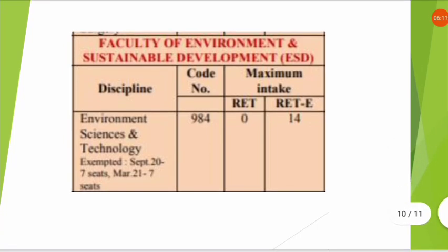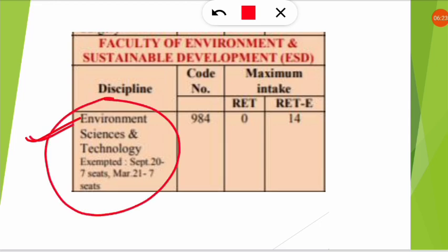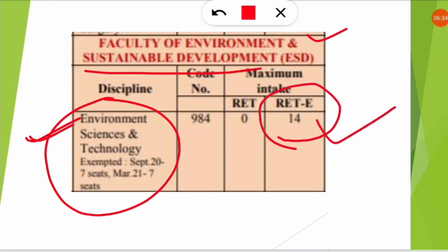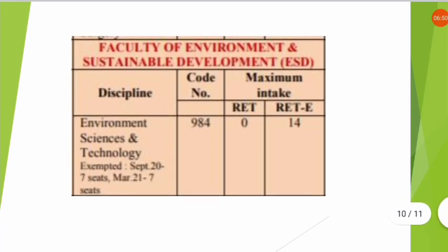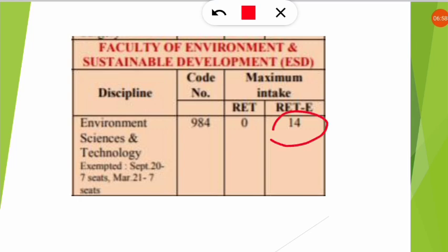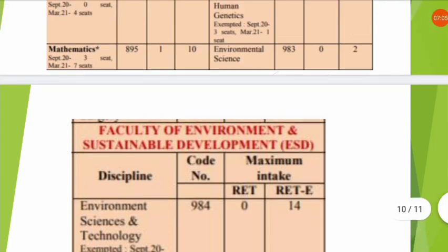There is one more important distinction: environmental science versus environment science and technology are different. Environment science and technology falls under the Faculty of Environment and Sustainable Development — not under the science category — and it has 14 RET exempted vacancies. It is essentially for engineering students. If you are a pure environmental science student, you only have 2 seats. Be very careful while filling the application: if you select 'environment science' you will be considered for the 14-seat programme under Faculty of Environment and Sustainable Development, whereas selecting 'environmental science' puts you in the 2-seat programme.